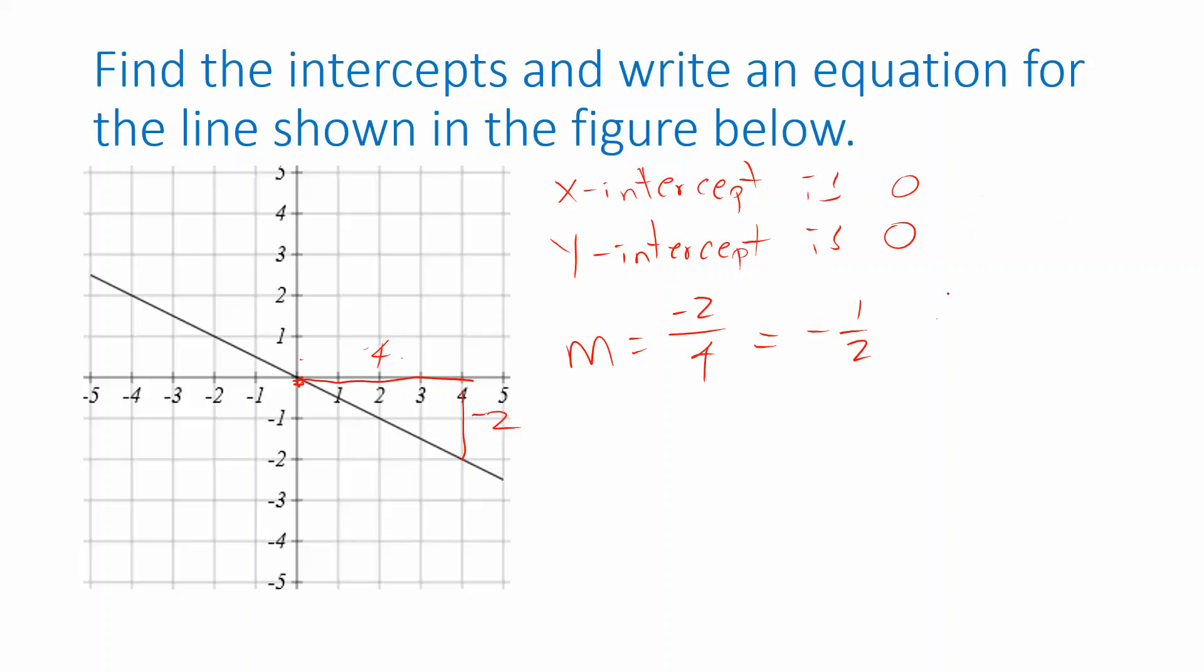Now between the slope and the y-intercept, which we know is the value of b in the equation y equals mx plus b, we can write down an equation for this line. I could write plus 0, but it doesn't seem necessary to write plus 0. So typically, this is the way we would write the equation, y equals negative 1 half x.